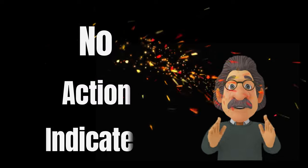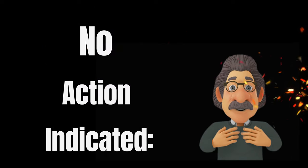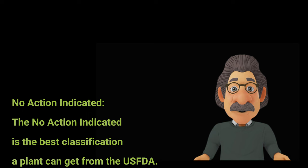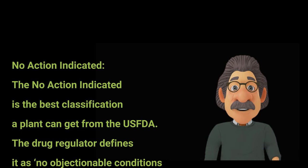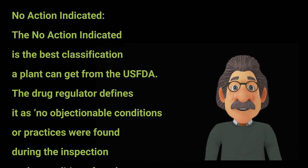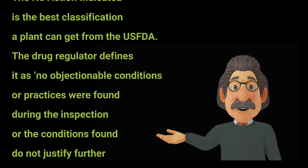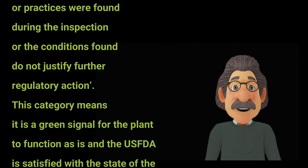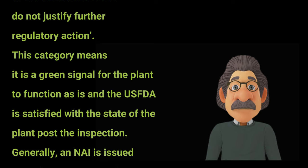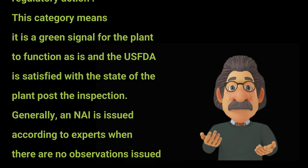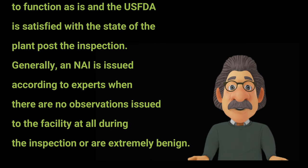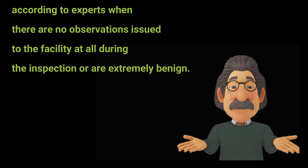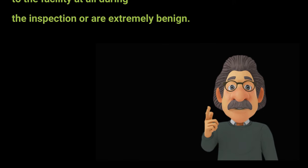The first one is No Action Indicated (NAI). This is the best classification a plant can get from the U.S. FDA. The drug regulator defines it as: no objectionable conditions or practices were found during the inspection, or the conditions found do not justify further regulatory action. This means it is a green signal for the plant to function as is, and the U.S. FDA is satisfied with the state of the plant post inspection. Generally, an NAI is issued when there are no observations issued to the facility at all during the inspection, or they are extremely benign.